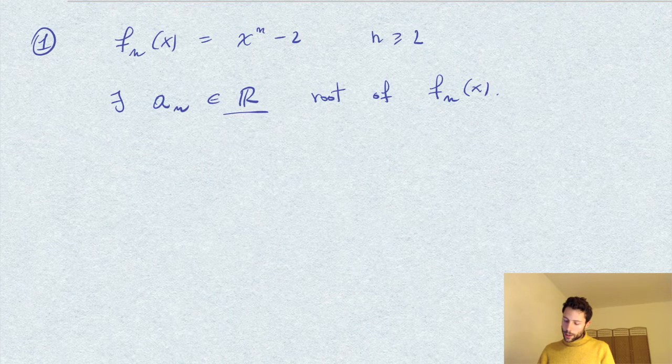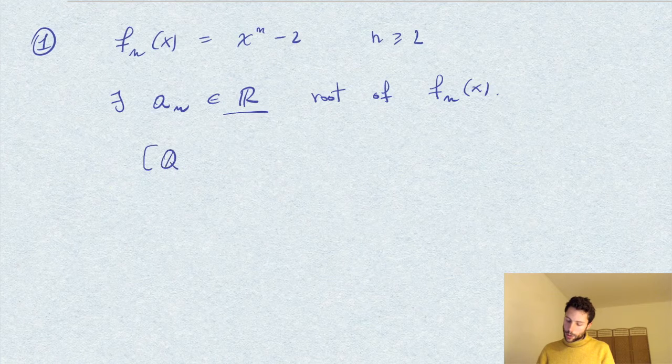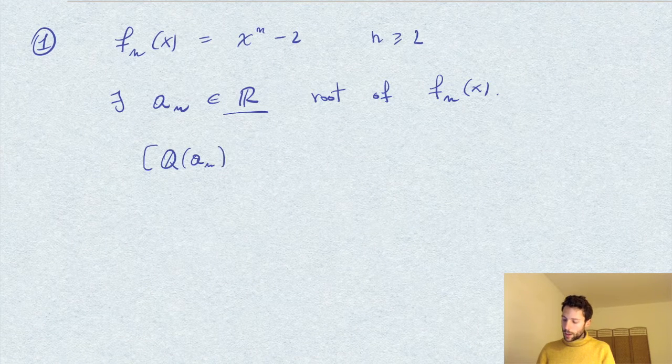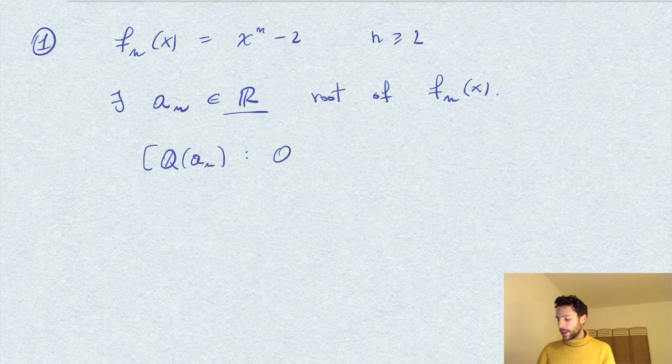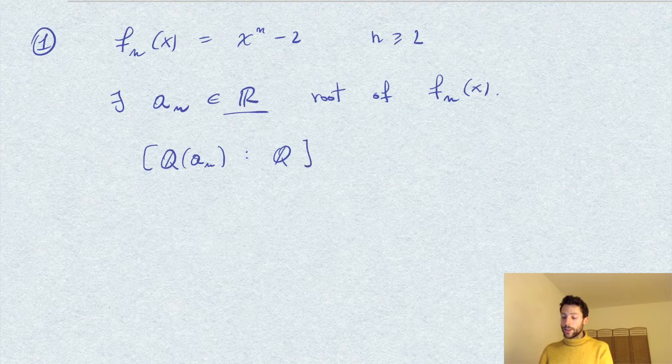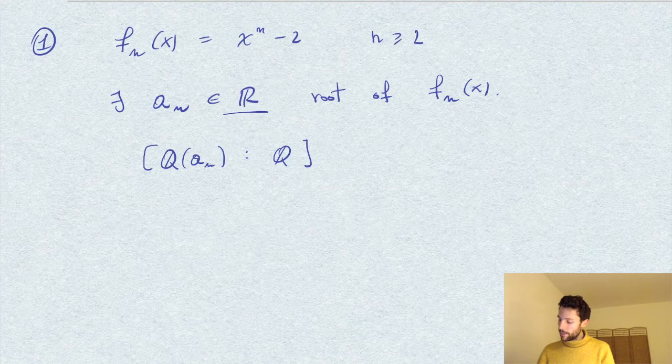Now the degree of the extension Q(a_n) will then be at least n, at least the degree of this polynomial f_n, which is n.